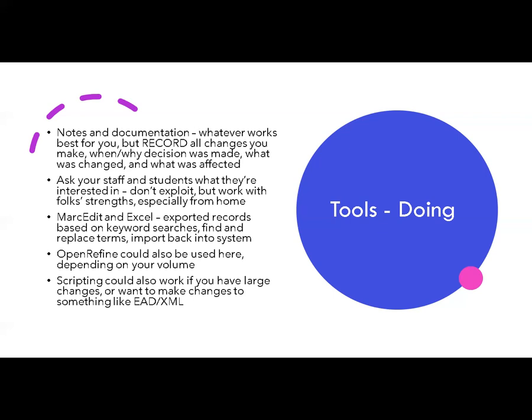A lot of the work done has been thanks to the help and expertise of interns, students, volunteers, staff, and community members. Rather than assigning projects to folks who are helping us, we tried to design projects around their interests — working with people's strengths and interests makes for really meaningful projects. When it comes time to updating terms in your system, MarcEdit and Excel are great tools for making batch changes. After exporting records based on keyword searches, you can use MarcEdit to find and replace terms and then import back into your system. OpenRefine is another option depending on your volume, and scripting also works for large changes or for things like EAD XML.